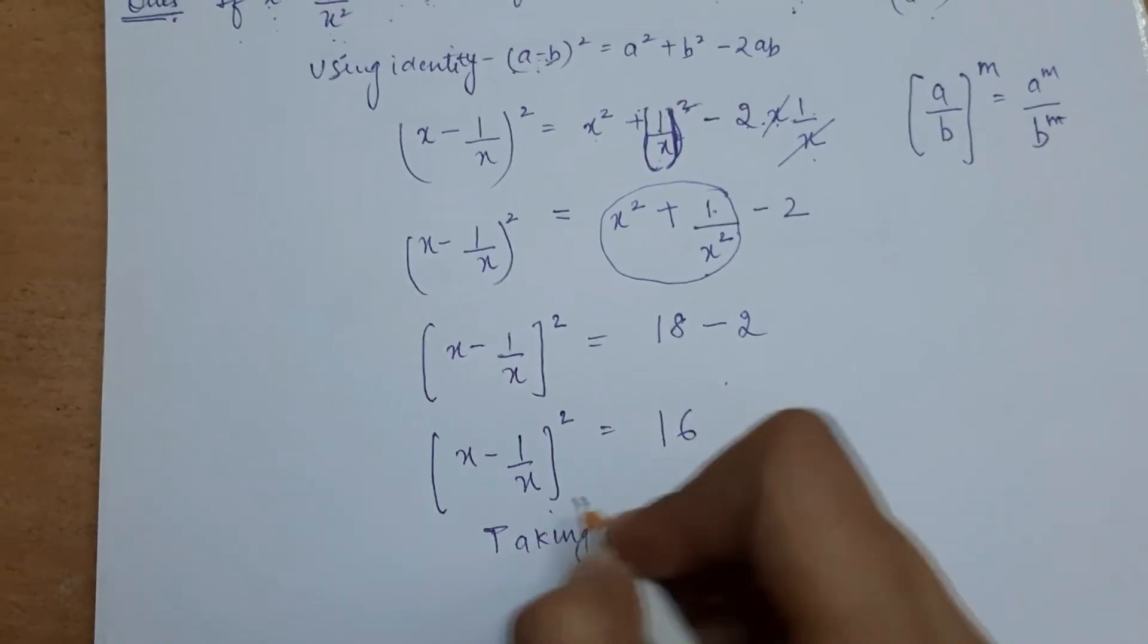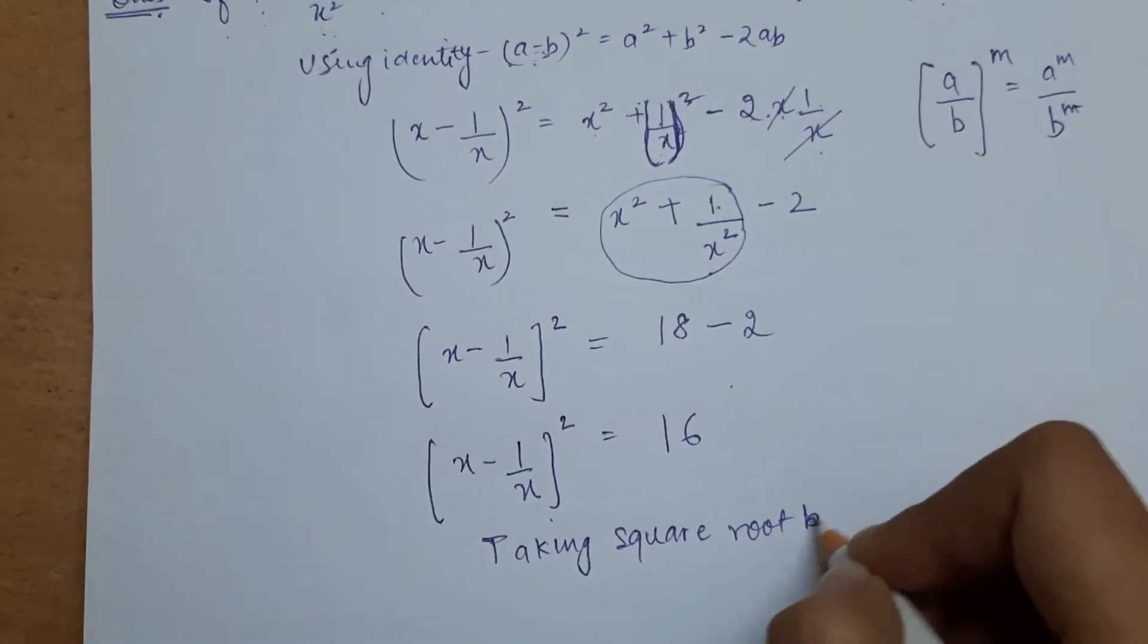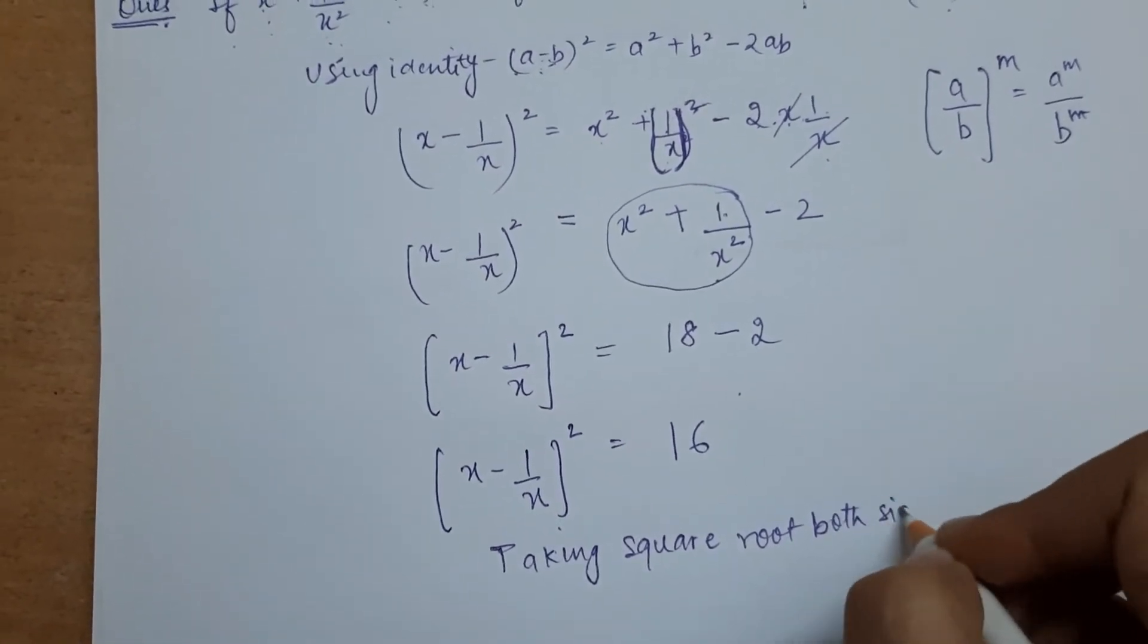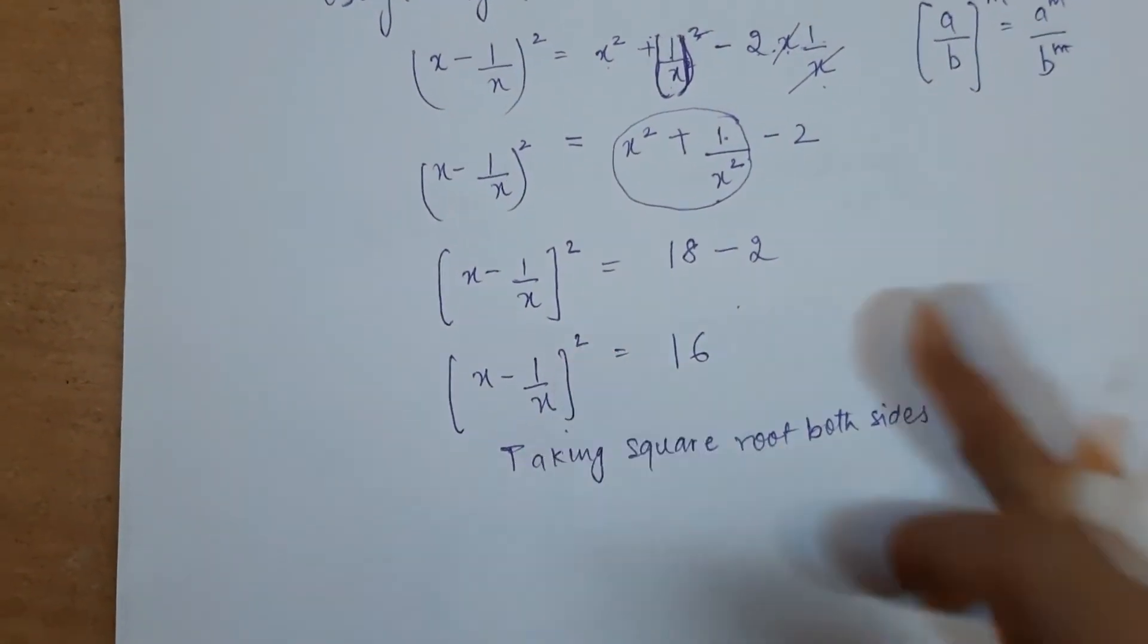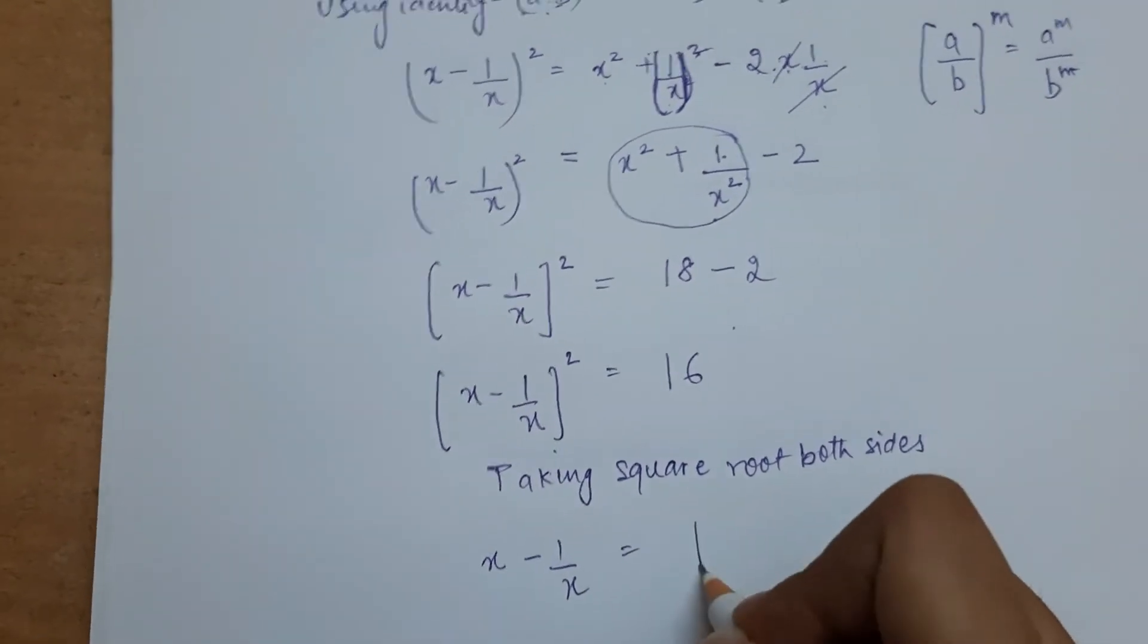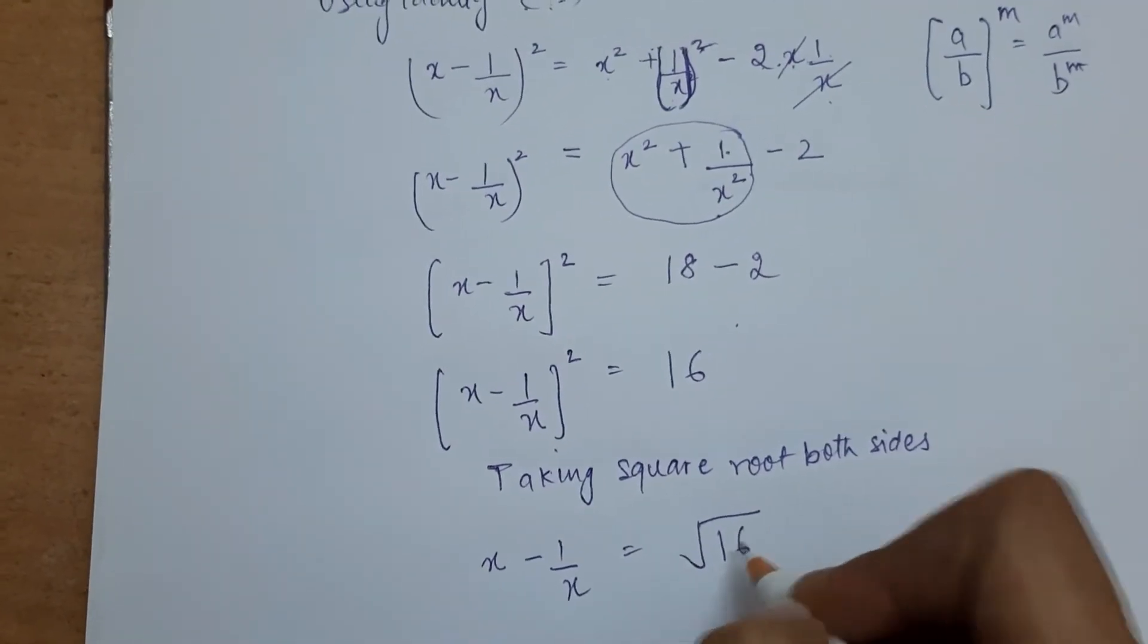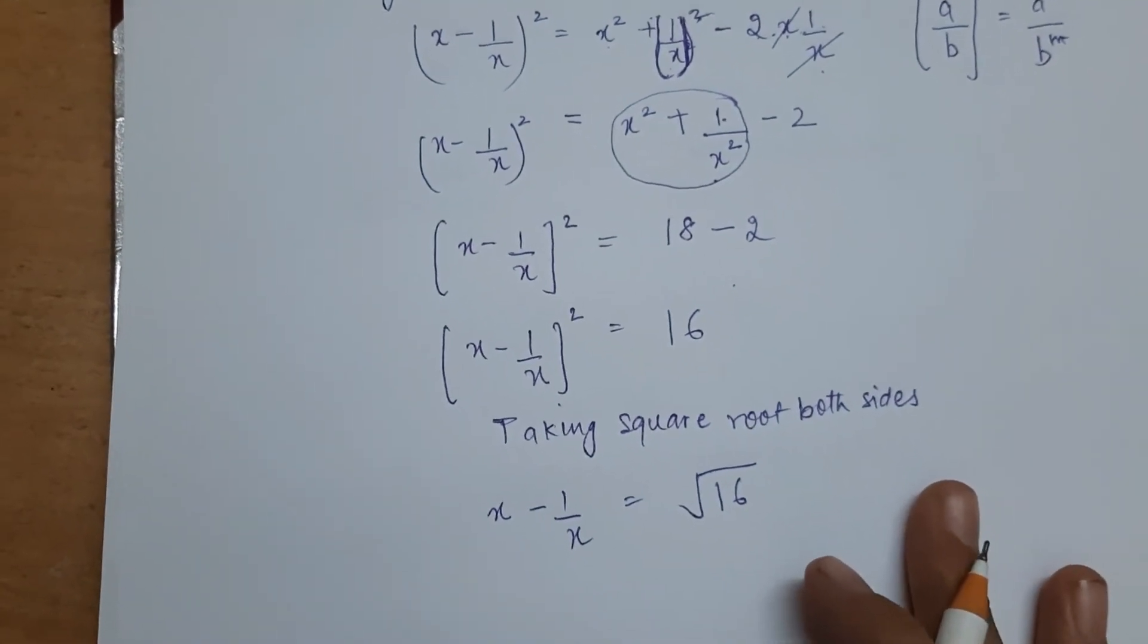Look at the left-hand side, we can see the square. So we will take square root - taking square root both sides. If we take square root both sides, square cancels with square root, so here the value is x minus 1 by x.